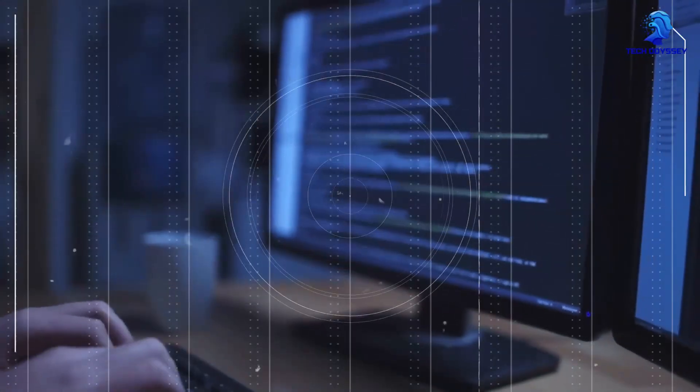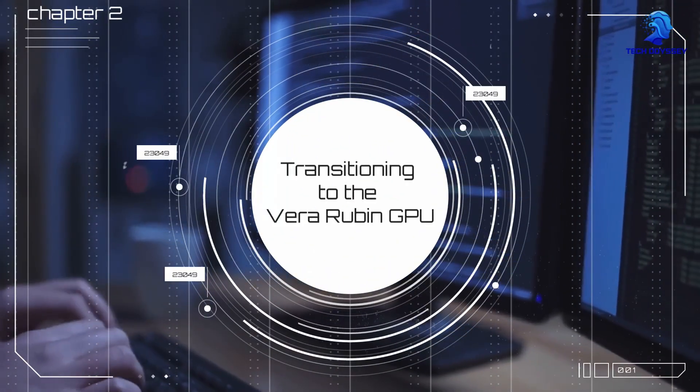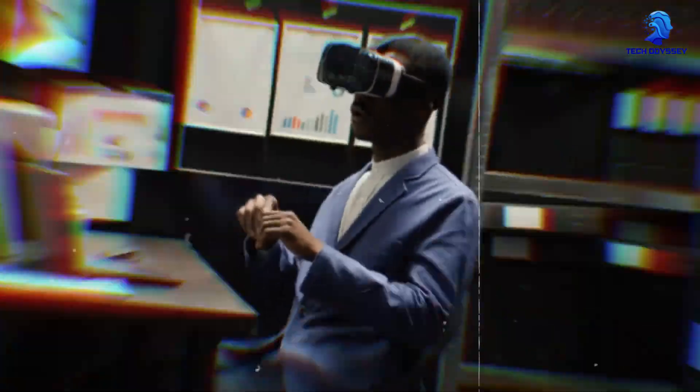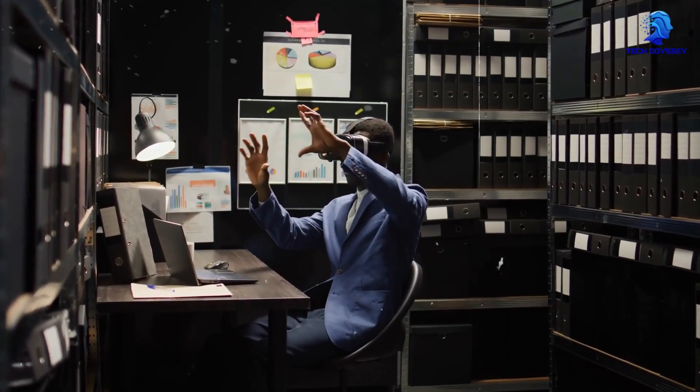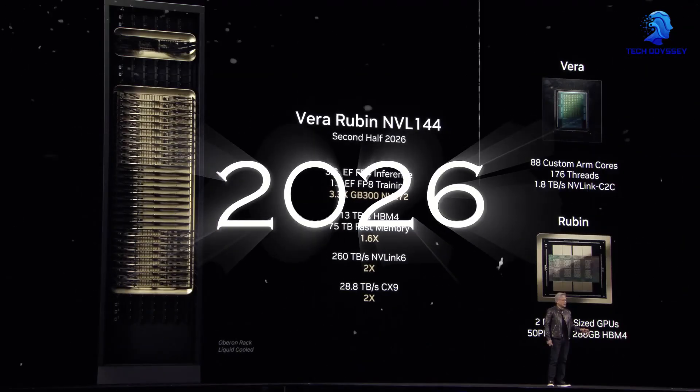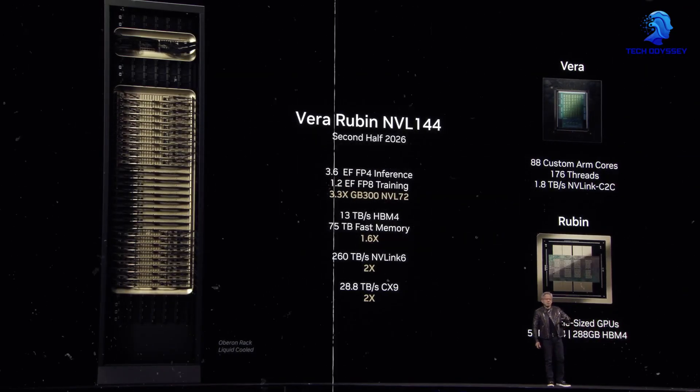Chapter 2: Transitioning to the Vera Rubin GPU. As we explore the future of AI, let's dive into the specifics of NVIDIA's latest innovations. The Vera Rubin GPU is named after the renowned astronomer who revolutionized our understanding of dark matter. Launching in late 2026, this chip is packed with features that make it a cornerstone for AI advancements.